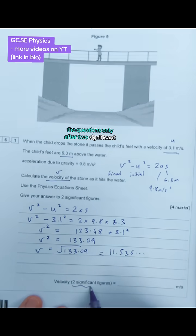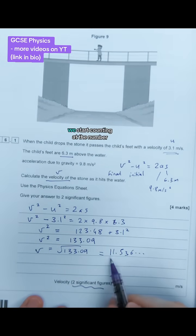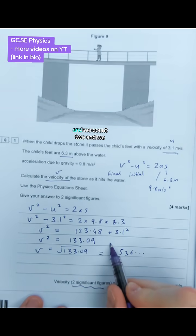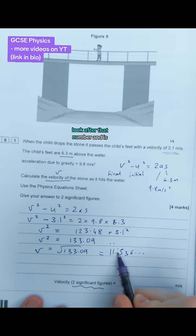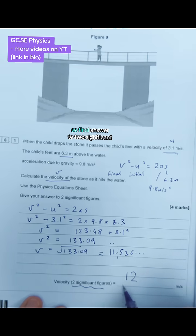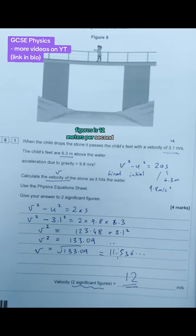The question's only asking for two significant figures. We start counting at the number that's not zero and count two. We look at the next number - if it's five and above, we round up. If it's four and below, we round down. In this case, it's five and above, so we round up. Our final answer to two significant figures is 12 meters per second.